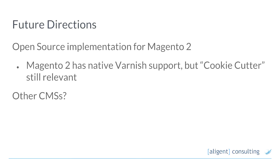Just briefly, Magento 2 has been around for a little while now — adoption's been problematic. Magento 2 has native Varnish support. It will do things like ESI for certain content and Ajax-load certain content. A dead giveaway for a Magento 2 site using Varnish with the native implementation is you land on the page and the navigation is completely non-existent until it Ajaxes in a couple of seconds later. That's not ideal. We think cookie cutter has some relevance for Magento 2 — there just isn't an existing implementation just yet.